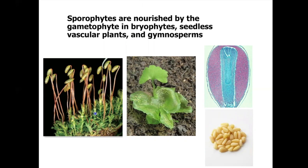Either throughout the entire life of the sporophyte in the bryophytes, or for a short period while the sporophyte is just starting to grow and get established, it's nourished by the gametophyte. In our pines, these pine seeds — also called pine nuts — are gametophyte tissue surrounding a small sporophyte embryo. When these seeds get put in the ground and start to grow, that growing sporophyte seedling will get its nutrition from the gametophyte tissue stored in the seeds.